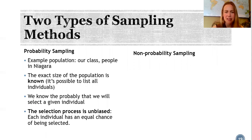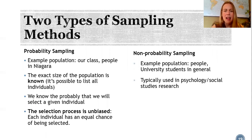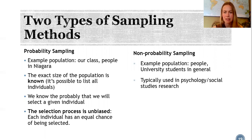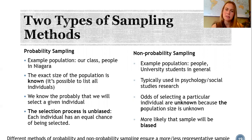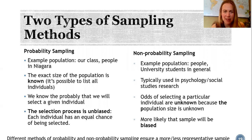On the other hand, non-probability sampling is the kind of sampling method you'll probably read about in papers. It's typically used in psychology and social sciences when the target population is much larger, so it's not possible to list all of the people in it — for example, people in general or university students in general. Because we can't list everyone and don't know the probability of selecting a particular individual, it's more likely that the sample will be biased.